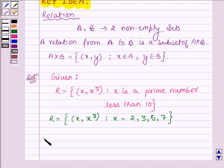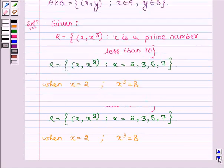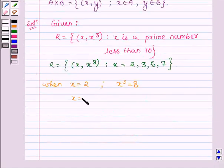Now when x is equal to 2, then x³ is equal to 8. When x is equal to 3, then x³ is equal to 27.